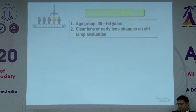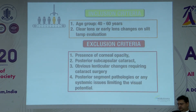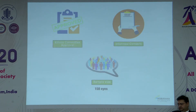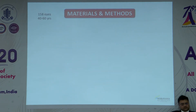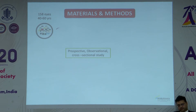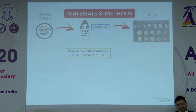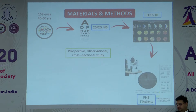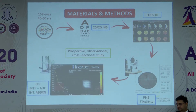Inclusion criteria: age group 40 to 60 with clear lens or early lens changes on slit lamp evaluation. Exclusion criteria: corneal opacity, posterior subcapsular cataracts, obvious lenticular changes, and posterior segment pathologies. Ethics committee approval and informed consent were obtained from all patients. Sample size was 158. It was a prospective observational cross-sectional study. All patients underwent visual acuity testing and came out at 20/20 N6. On slit lamp, cataract was graded according to LOCS3, followed by PNS staging on the Pentacam, along with DLI, modular transfer function, and internal aberrations on the eye trace.